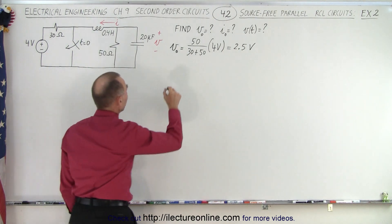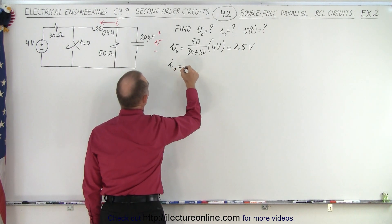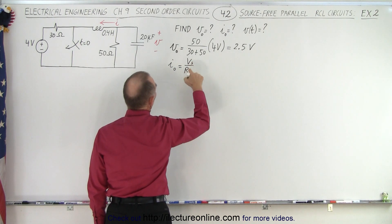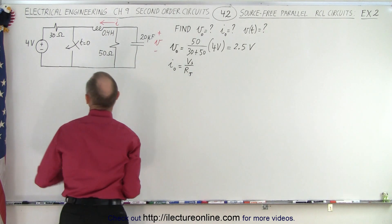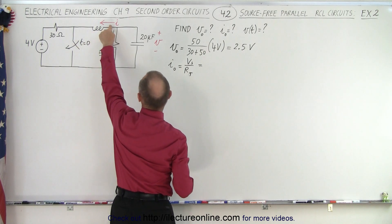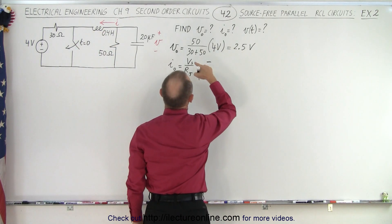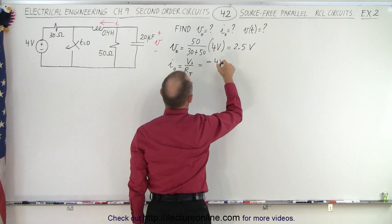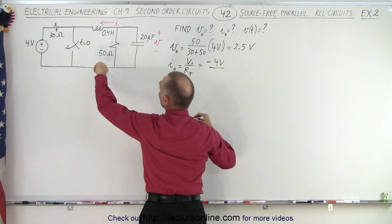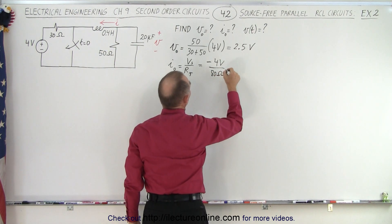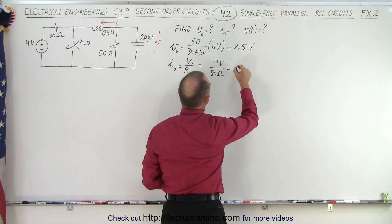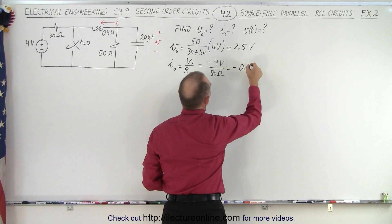All right, now the initial current. I initial is equal to the voltage of the source divided by the total resistance. The source voltage is 4 volts, but notice that the current will be driven in the opposite direction of the arrow, so it will be minus the source voltage of 4 volts divided by 80 ohms, the total resistance is 80 ohms, which is equal to minus 0.05 amps.